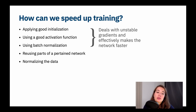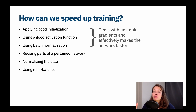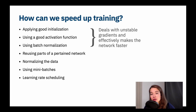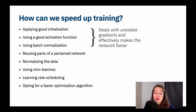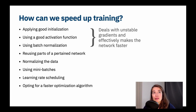Another thing we can do is normalize the data — make sure the data is normalized before we put it into the network. We can use mini batches. We can do learning rate scheduling, sometimes called learning rate decay, which I'll talk about in a second. And you can opt for a faster optimization algorithm. Normally we use gradient descent, but we'll talk about different varieties of optimization algorithms and how they help us train the network faster.